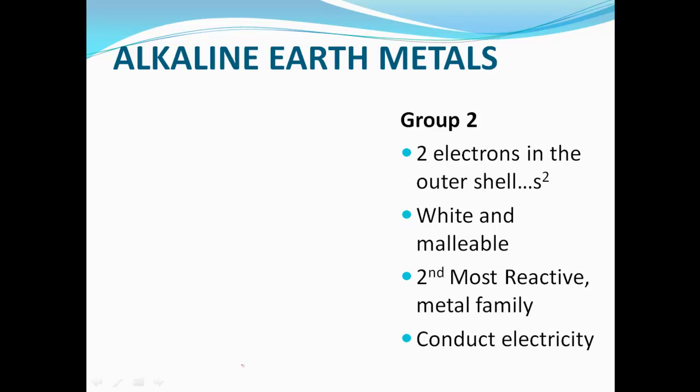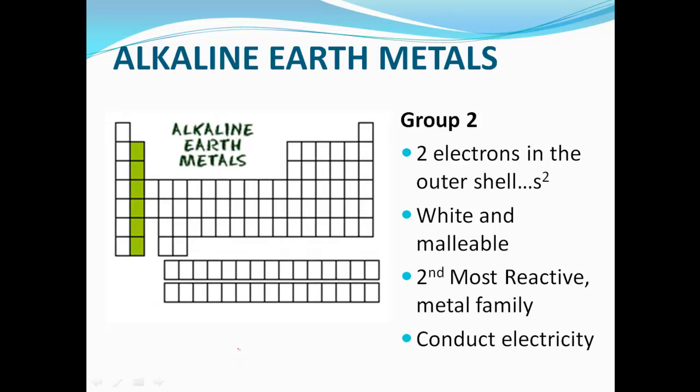The second family is going to be the alkaline earth metals. The alkaline earth metals are in group number two. These guys, top to bottom, are my alkaline earth metals. They have two electrons in their outer shell. Therefore, they all are S2s in their outer shell. They're white and malleable, and I want you to know that this is very important - they are the second most reactive group, second most reactive family.